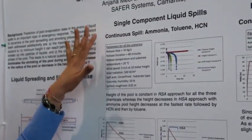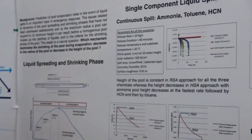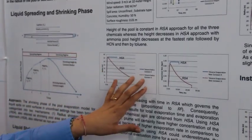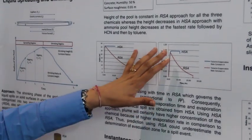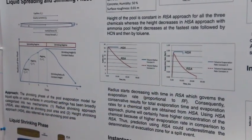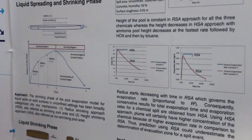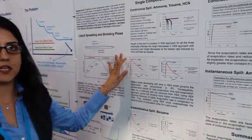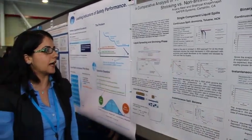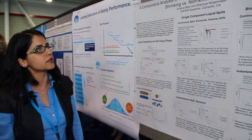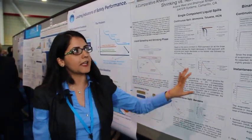We then apply it for various kinds of single-component spill scenarios, including ammonia, toluene, and HCN, and we find that the evaporation rate using the height-shrinking approach is higher than the evaporation rate using the radius-shrinking approach, and the radius decreases more in the case of the radius-shrinking approach than the height-shrinking approach.